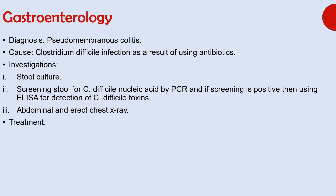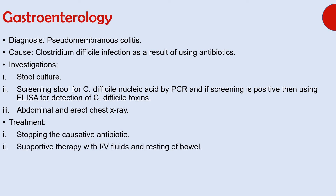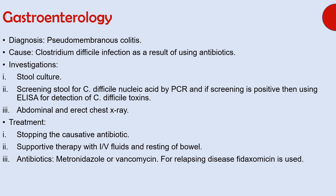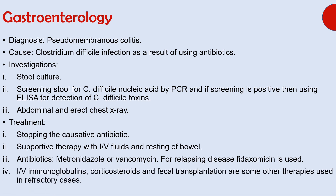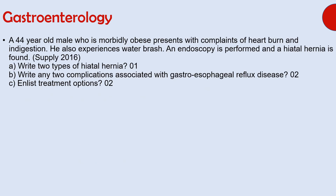Treatment begins by stopping the causative antibiotic and providing supportive therapy with IV fluids and bowel rest. The mainstay of treatment is antibiotics — metronidazole or vancomycin, with metronidazole as the first-line antibiotic. For relapsing disease, fidaxomycin is used. For refractory cases, administration of intravenous immunoglobulins, corticosteroids, and fecal transplantation is done. Here is the reference page number from Davidson's.